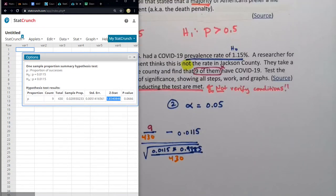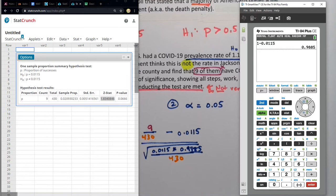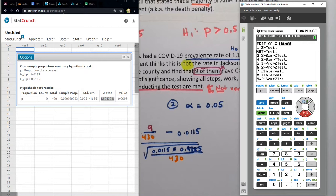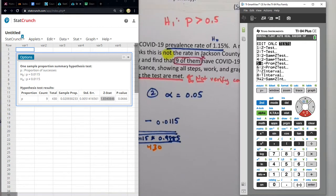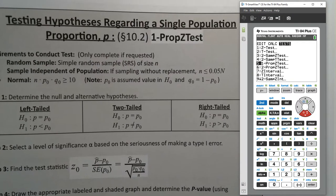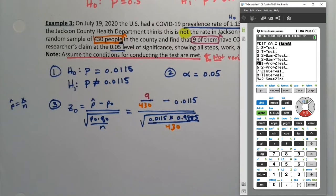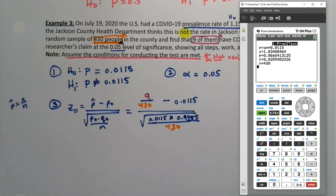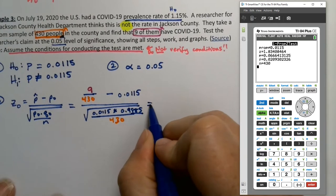On the calculator, the same thing. You go to one prop Z test, number five. P0 was 0.0115. You're going to have to have a decimal there. X was nine, N was 430. And I choose not equal to, so I'm going to press enter on the not equal. And there we have it, 1.834. The same number that StatCrunch gave us. So that means that this value is 1.834, and you find it with technology.